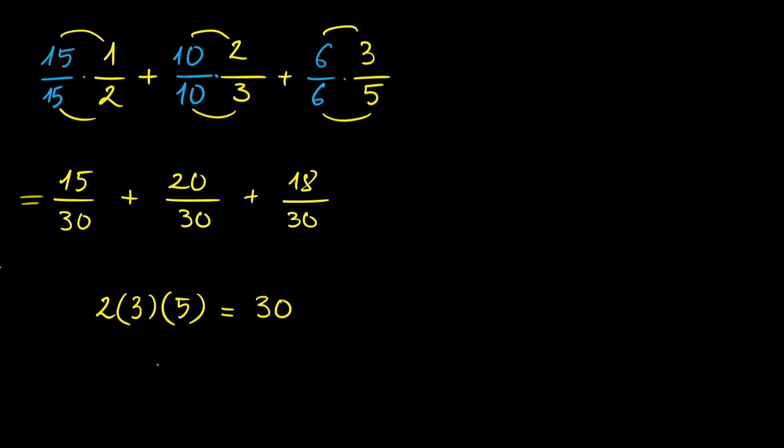So now I have a common denominator of 30, which means I can now add the numerators of the three fractions. 15 plus 20, that's 35. 35 plus 18 is 53. So the final answer is going to be 53 over 30, and we can convert this to a mixed number.